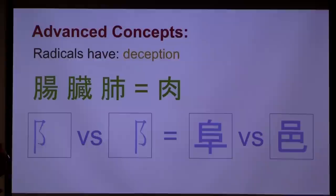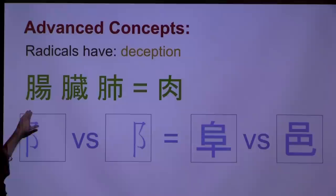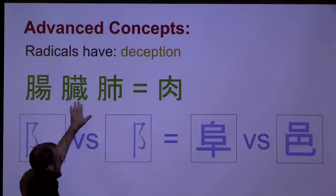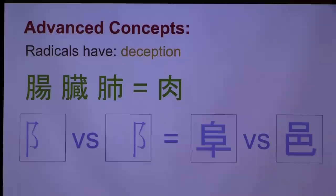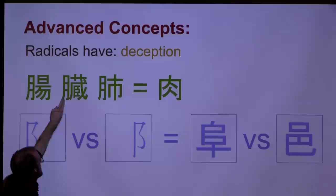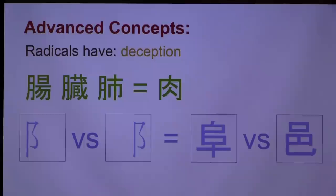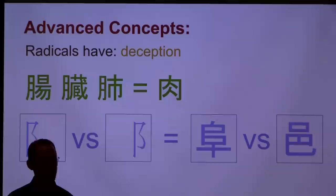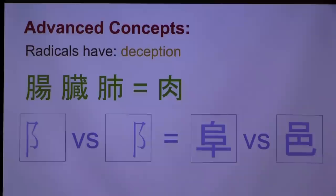Radicals can also be deceptive. This means intestine, this one I'm forgetting, and this one is lung — they're all parts of the anatomy. Whenever you see moon on the left like this, it's actually the meat radical. We call it 'nikuzuki' in Japanese, which literally means 'meat moon.' This is one of those strange conventions you have to be aware of. It's particularly confusing without someone explaining it — I didn't understand why the moon radical was in all these anatomical words when I moved to Japan, until I understood how variation worked.